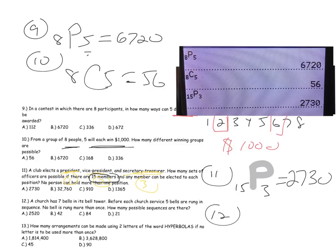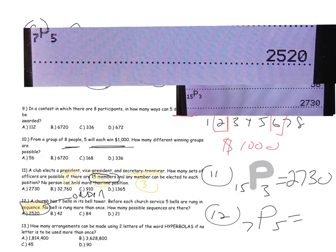Number twelve: a church has seven bells in its tower and before church five of the bells are going to be rung in sequence. The key word is sequence — a sequence is the same as an order. You have seven bells being rung in order, so order matters and this is a permutation. Sequence, arrangements, order matters: 7P5, or 2,520 ways.